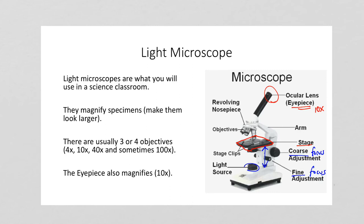Last but not least, you have your objectives. There are three, sometimes four objectives on the light microscopes that you will use in a typical secondary school science lab.